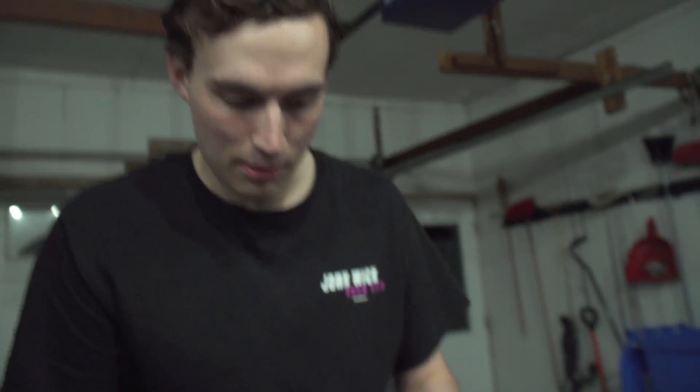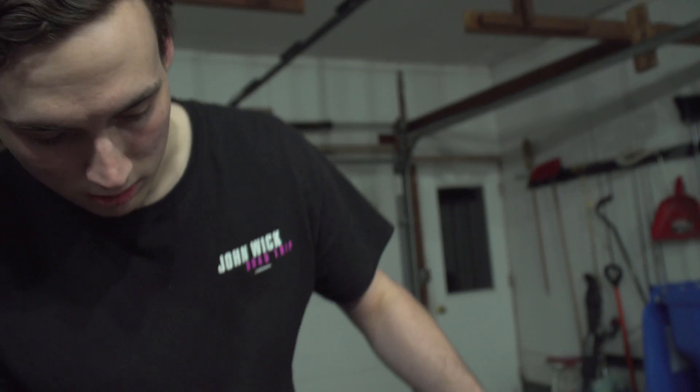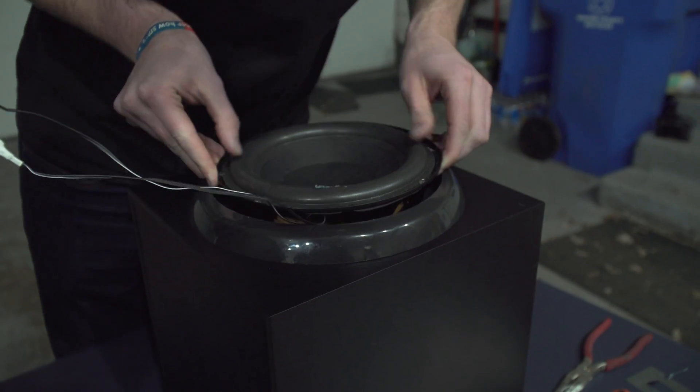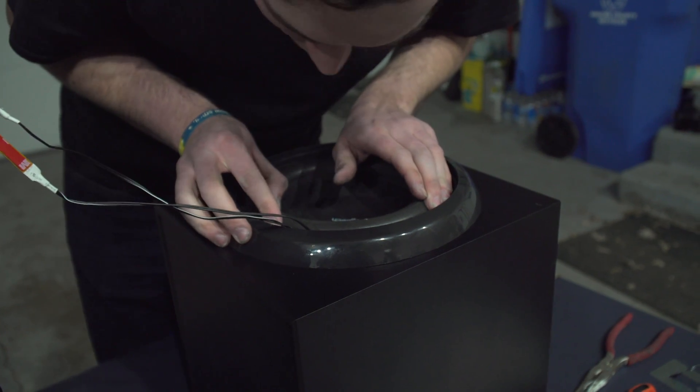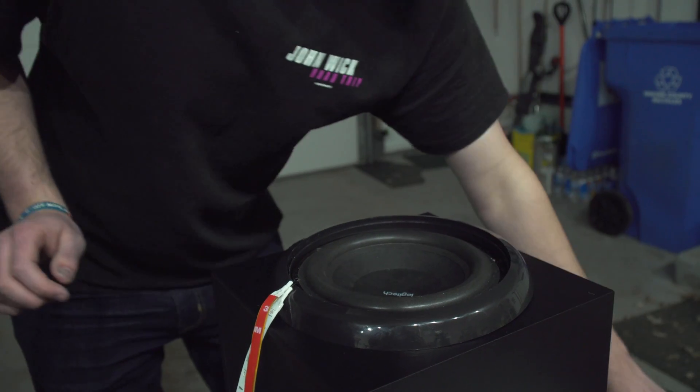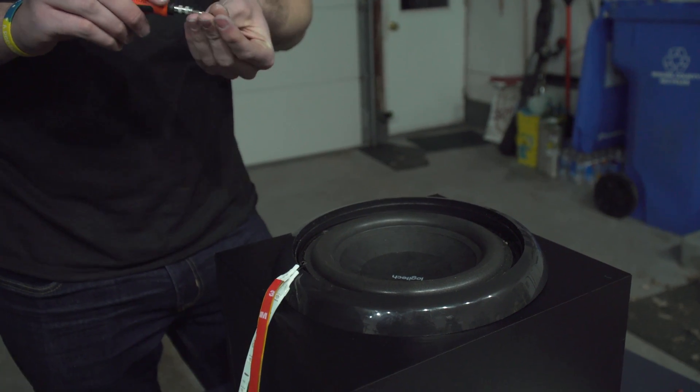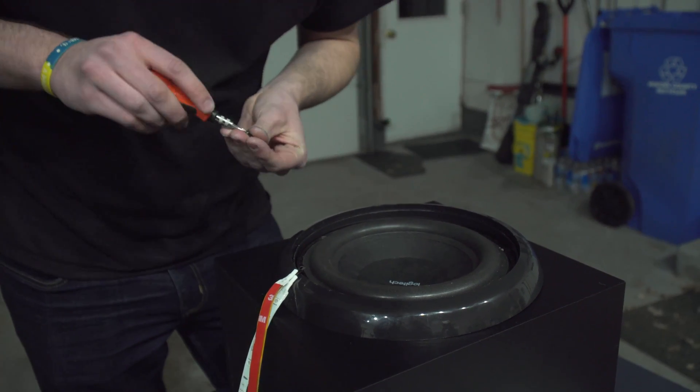Now we're going to reassemble the subwoofer now that we know that it works. So we're going to start by just placing it into the cage and lining it up with the holes. Alright, so now we're going to take the screws and start screwing it back together.